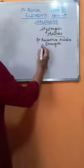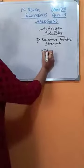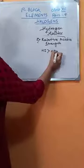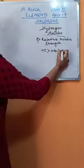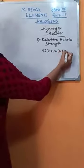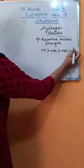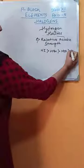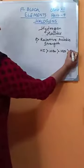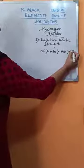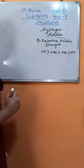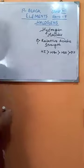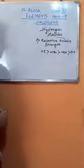So the acidic order is just the reverse of the polarity order. The acidic strength order is HI > HBr > HCl > HF.